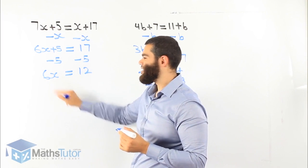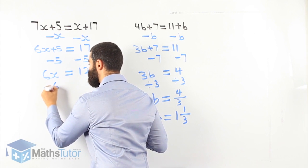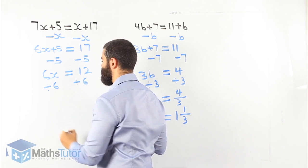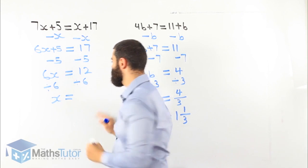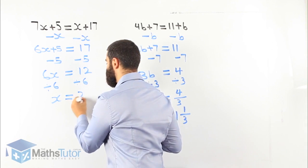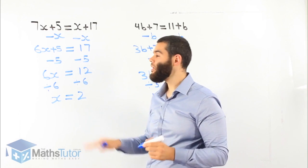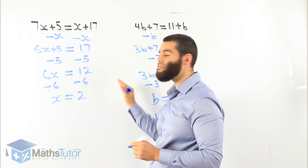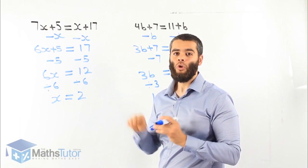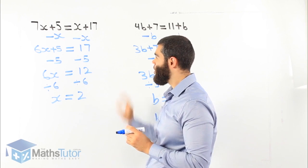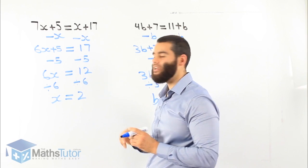Now lastly, 6x is 6 times x, so the opposite is divide by 6. Divide by 6 on both sides. 6 divided by 6 is 1, so 1x. And 12 divided by 6 is 2. So x is 2. The steps are very similar to all the other ones — go step by step, what we do to one side we do to the other, and we get our answer.